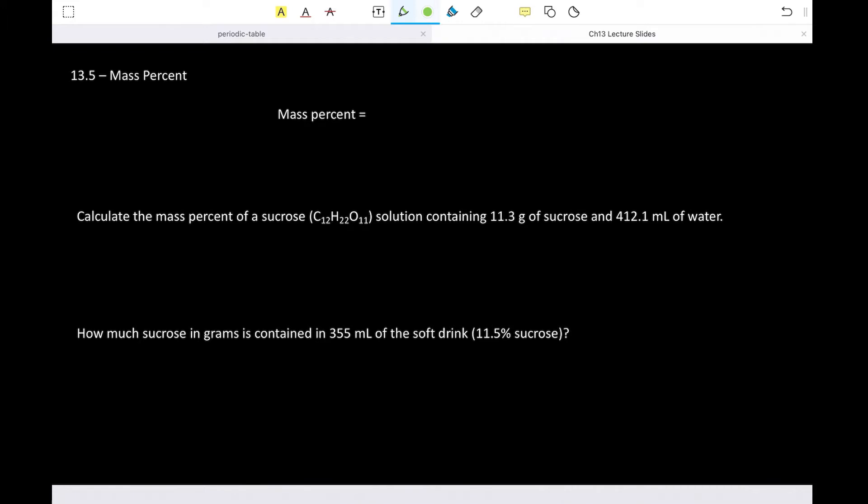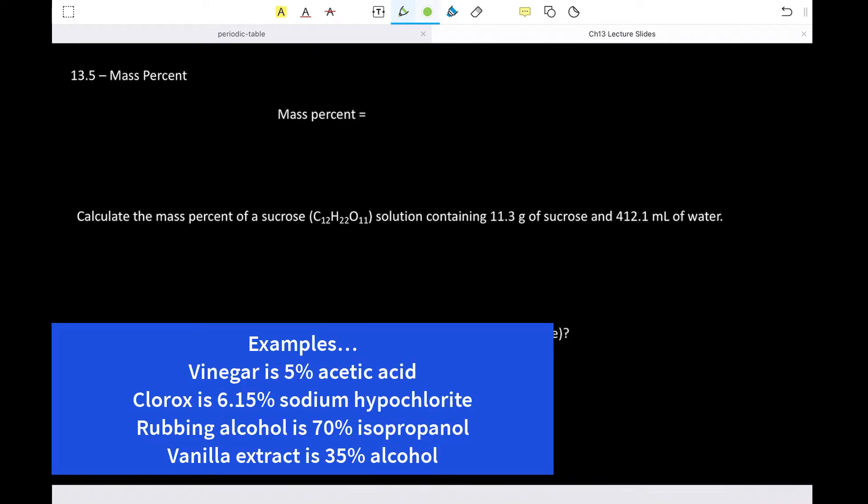It gives us the ability to talk about things that are dilute and things that are concentrated. And in normal everyday life, these are the units we're most likely to encounter. So the concept of something being like, for example, vinegar at the store is 5% acetic acid.